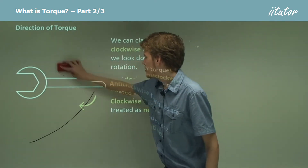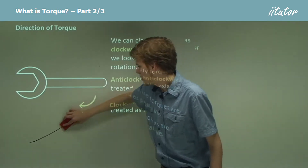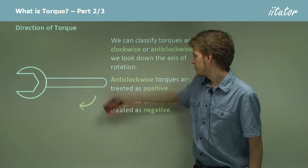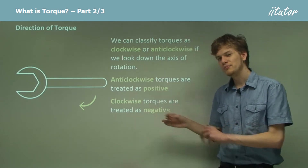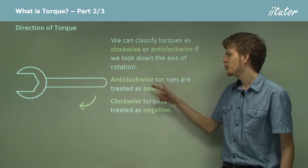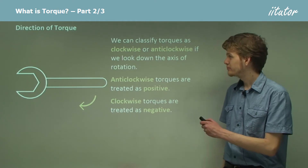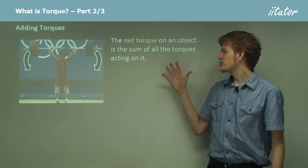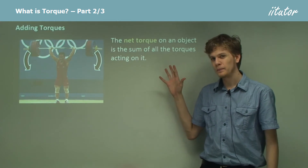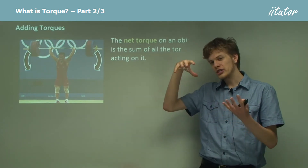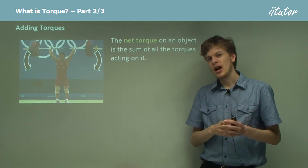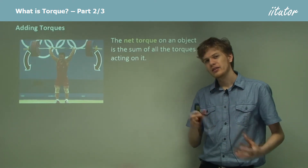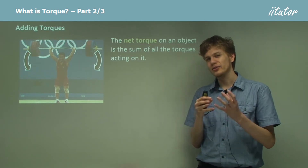Now the reason that we talk about them as positive and negative is because we're able to add them together. And having them positive and negative makes that a little easier to do if we're talking about the direction. The net torque on an object is the sum of all the torques acting on it. So if we have one torque turning a spanner in one direction and another torque trying to turn the spanner back in the other direction, then we can add them together and see that the torques are going to cancel out.